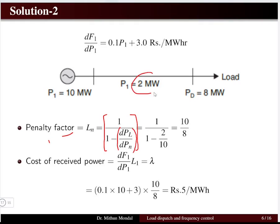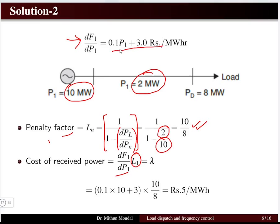The penalty factor is given by 1 divided by (1 minus dPL/dP1). Here the power loss is 2 MW and power generation is 10 MW, so the penalty factor is 10/8. Multiplying this penalty factor by the incremental production cost dF1/dP1 at P1 = 10 MW gives the cost of received power as 5 rupees per megawatt hour.